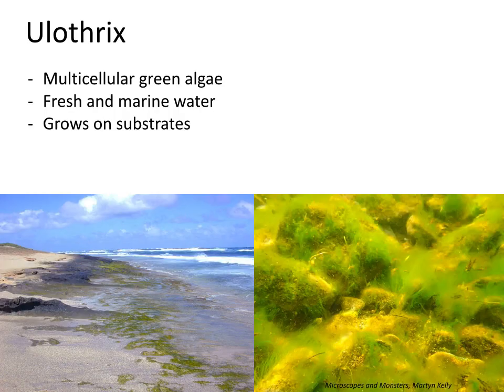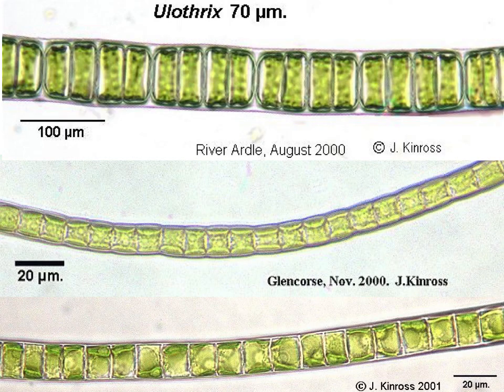Green algae is a large group with a diversity of species that include both unicellular and multicellular organisms. Eulothrix is a multicellular green algae that is generally found in fresh and marine water and grows on substrates like sand particles or rocks. In this photo on the bottom right, you can see the species Eulothrix equalis has completely covered cobble-sized stones found in a lake's littoral zone. Eulothrix has an unbranched filamentous structure, and the cells are arranged in a single row, as can be seen in these microscopic images.